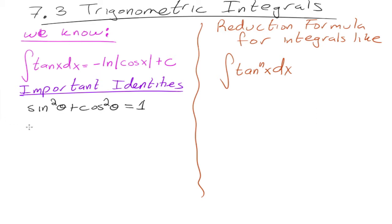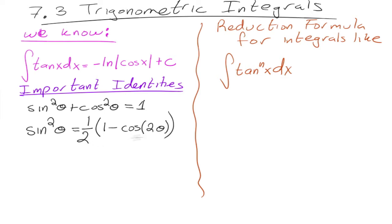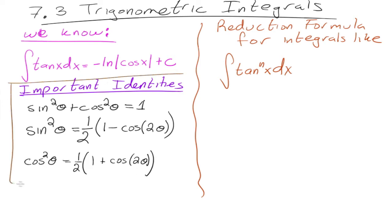Two identities we're going to use a lot are the reduction identities. If I asked you to integrate sine squared, you wouldn't be able to because you'd need to get rid of the squared. What you can do is use the reduction identity: sine squared equals one-half times the quantity one minus cosine of two theta. And cosine squared theta equals one-half times the quantity one plus cosine of two theta. That you can integrate.